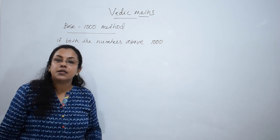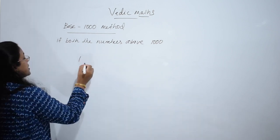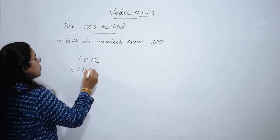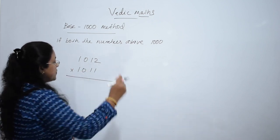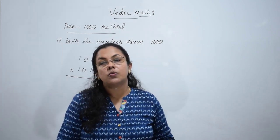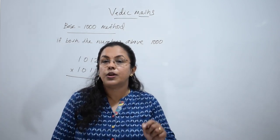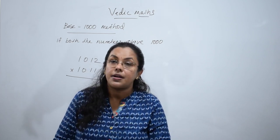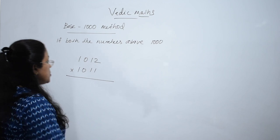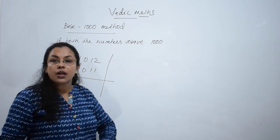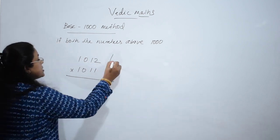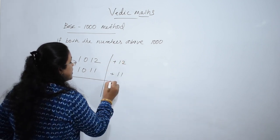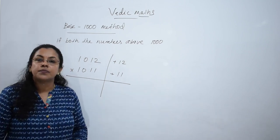If both the numbers are above 1000, let's multiply 1012 into 1011. We know base method, right? Base 100 uses deviations from 100. Here it is base 1000, so write the deviations from 1000. The deviation is 12 greater than 1000, and here it is 11 greater than 1000.